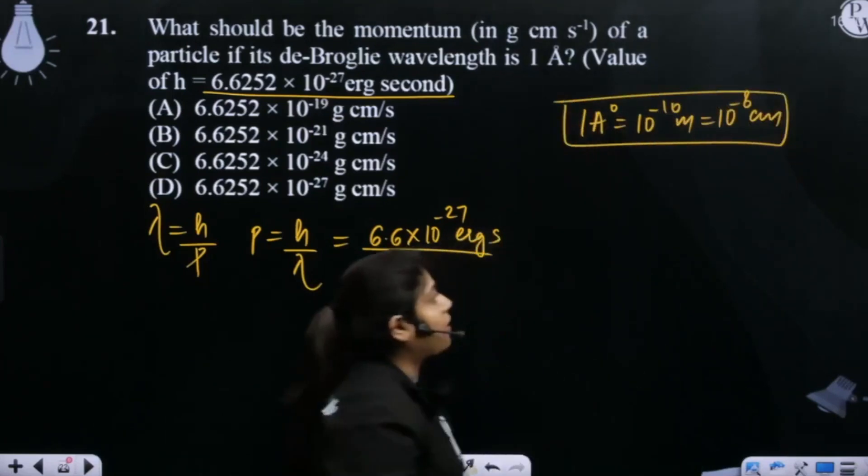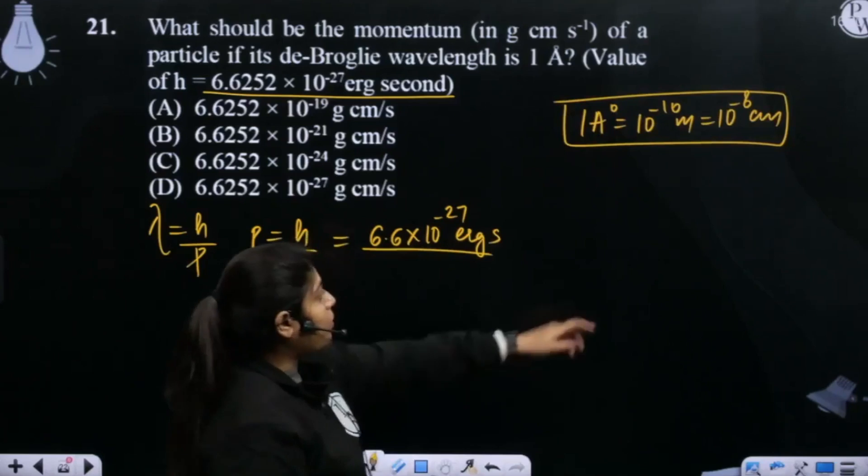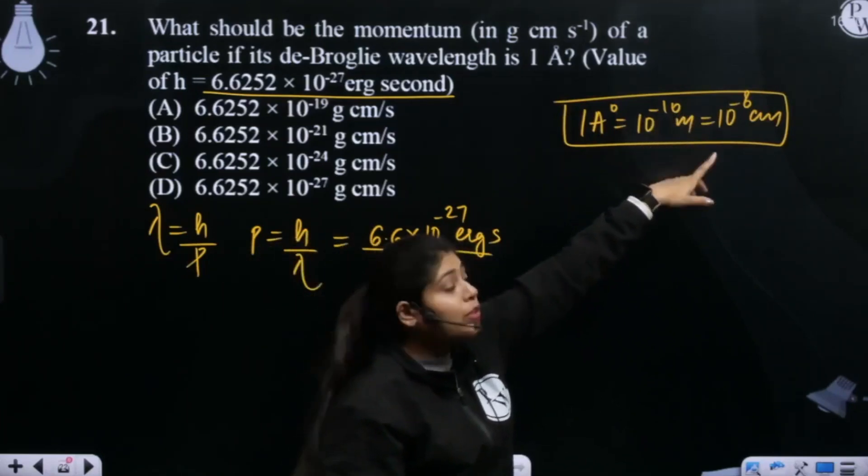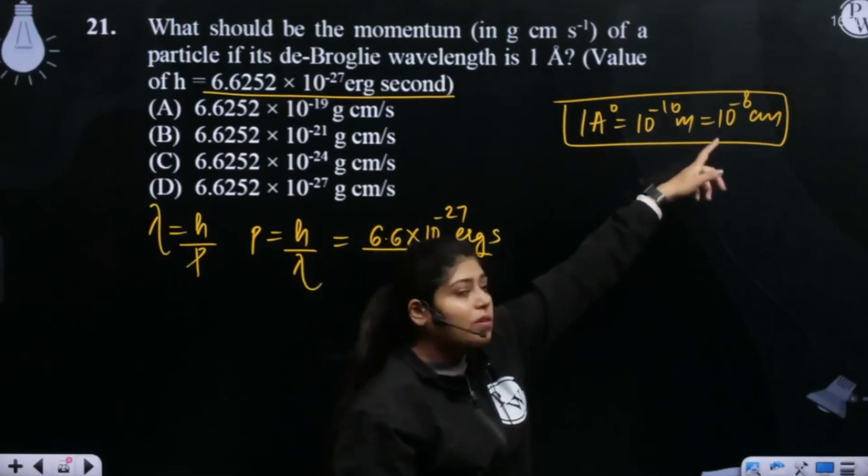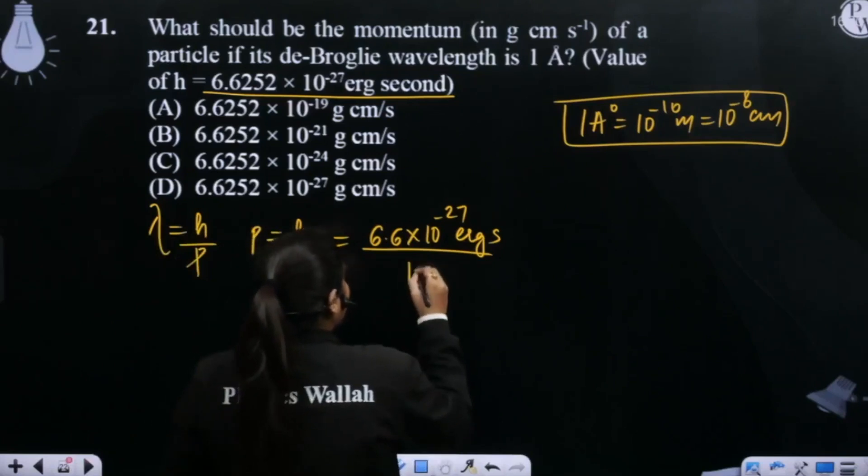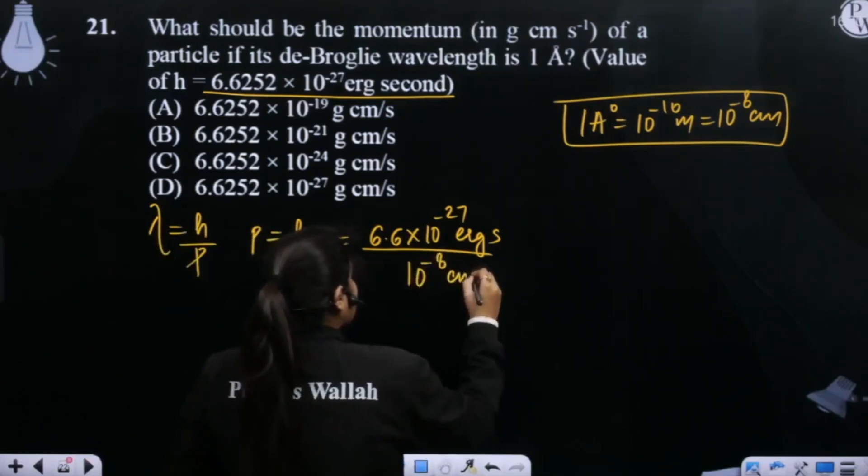So this is what we see. Right? When you do the meter in centimeter, you multiply it by 100. That means 10 to the power 2. And how much is it? 10 to the power minus 8 centimeter. So what will I write directly here? 10 to the power minus 8 centimeter.